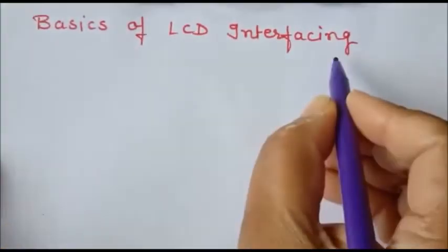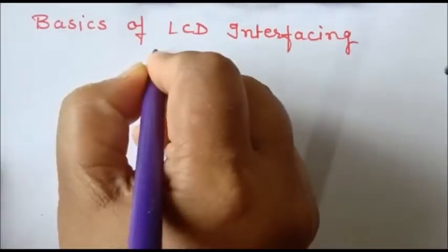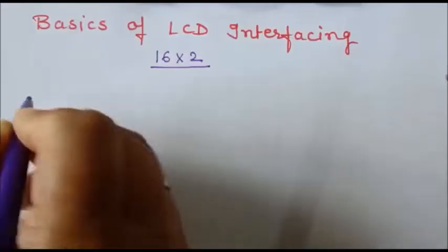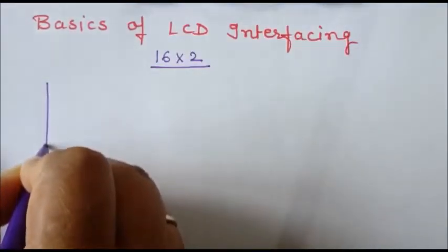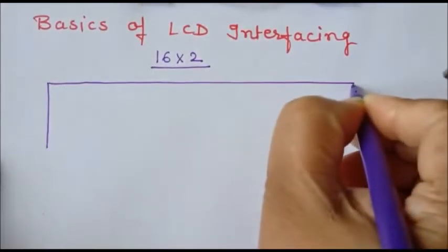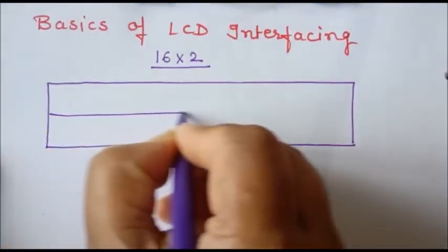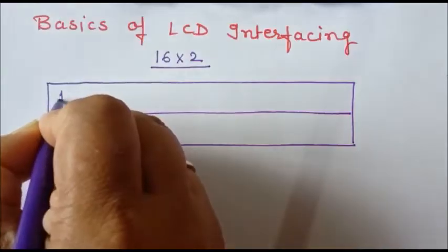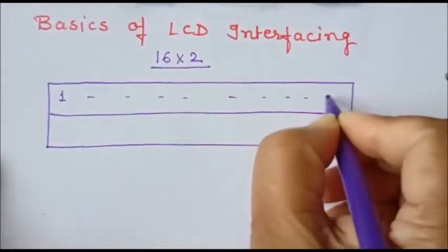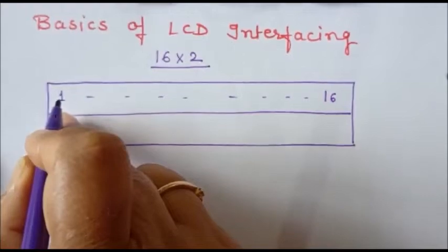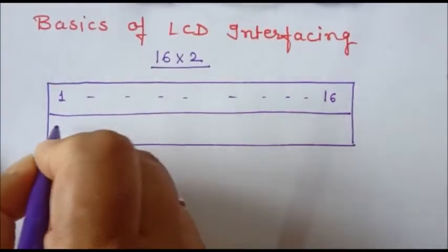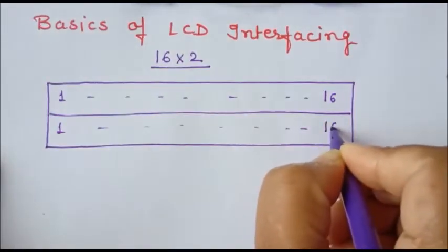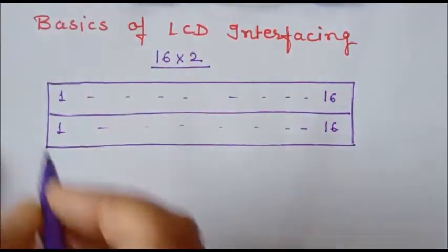We will discuss the basics of LCD interfacing, specifically 16 by 2 LCD. The 16 by 2 LCD has two rows, and in each row we can display 16 characters. So in row 1 we can display characters 1 to 16, and in the second row we can again display 16 characters.